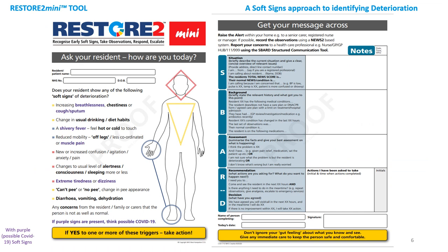This is what the Restore2Mini tool looks like — usually a simple paper tool that you can print and have ready to use. If you notice any soft signs or are concerned about a resident or client, you can grab a form which gives a list of prompts and record your observations. Your workplace may have made Restore2Mini available via a digital tool; either way, the principles and process to follow are the same.